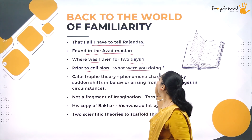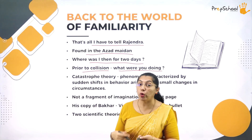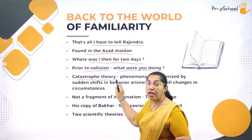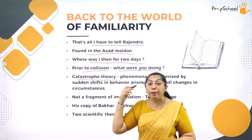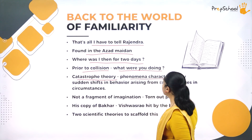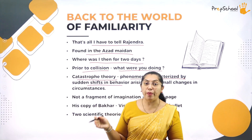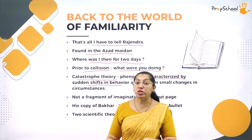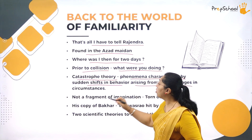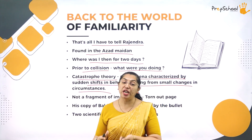Rajendra questions Gangadhar: 'Before you met with the accident, what were you thinking?' Gangadhar says he was thinking about the Catastrophe theory — a theory in his mind that he wanted to implement in the Battle of Panipat III. He explains: 'phenomena characterized by sudden shift' — and when he was thinking of implementing this theory, he suddenly met with an accident, which was the sudden change in his life. Even his behavior changed due to these sudden changes in circumstances.